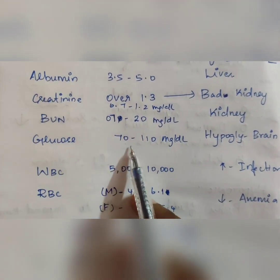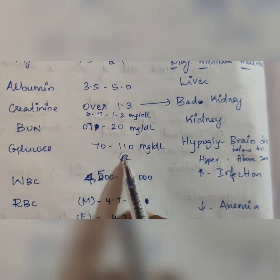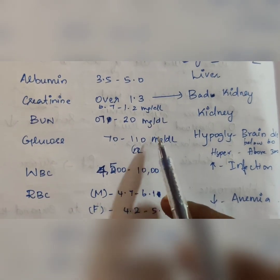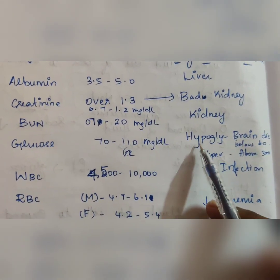Next, glucose. Normal glucose levels are 70 to 110 mg per deciliter.